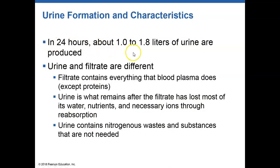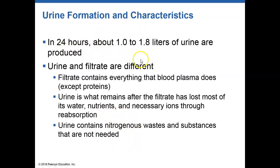Every 24 hours we produce between one and two liters of urine. Remember, we're making close to 180 liters of filtrate, but the majority of that filtrate is reabsorbed. Of the 180 liters filtered, we're only producing about one to two liters of actual urine — the rest is reabsorbed.